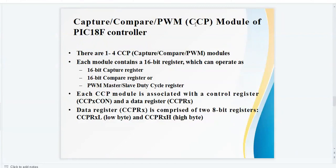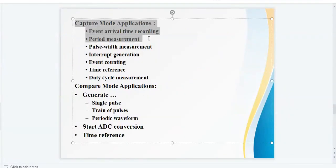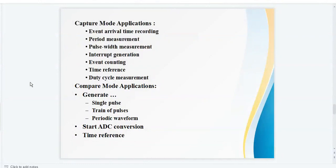Capture Compare PWM CCP module of PIC 18F controller. There are 1 to 4 CCP modules in PIC 18F controller. Each module contains a 16-bit register which can operate as 16-bit capture register, 16-bit compare register, or a PWM duty cycle register. Each CCP module is associated with a control register CCPCON and a data register CCPR register. Data register is comprised of two 8-bit registers: CCPR lower byte and CCPR higher byte. These are the applications of capture mode and these are the applications of compare mode.